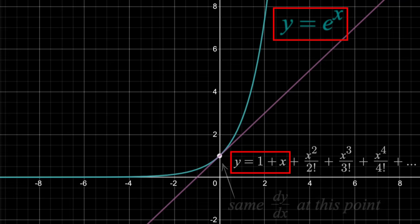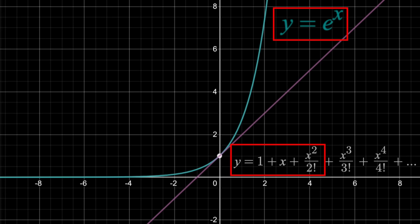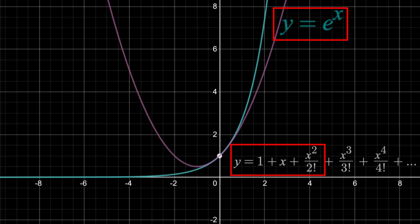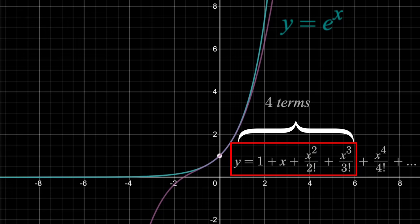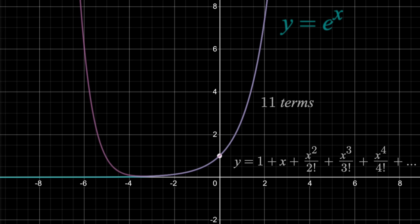If I go out to a third term, we get a parabola that is an even better approximation to e^x around zero. And this function and e^x have the same first and second derivative just at x equals zero. If I go to four terms, the approximation gets even better. And as we keep going, including more and more terms, the approximation keeps improving. Although I'll stop at 11 terms, if I were to go on forever, we would get a perfect approximation and the curves would look the exact same.